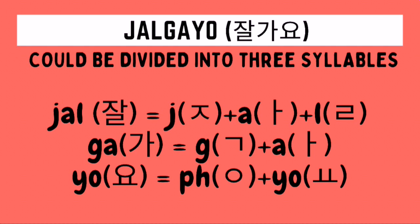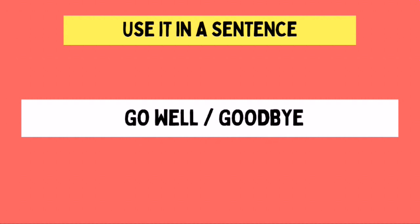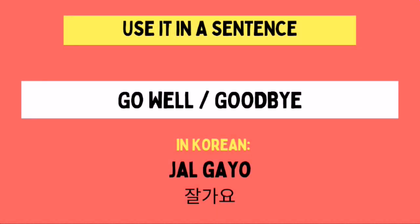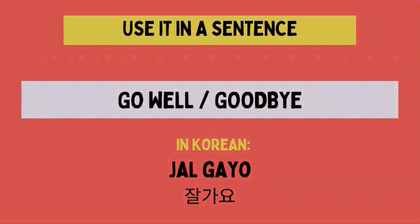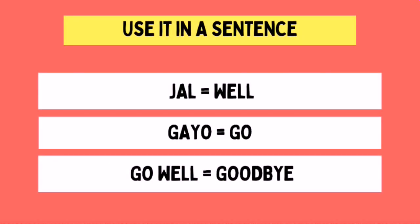We combine these to form the Hangul of Jalgayo. Now that we have an idea about the meaning of the word or phrase Jalgayo, let's look at this example phrase: Go well, or goodbye. The Korean translation of this is Jalgayo. The Jal part means well, and the Gayo part means go. So if we combine this, it results in a phrase that means to go well.